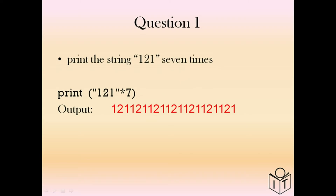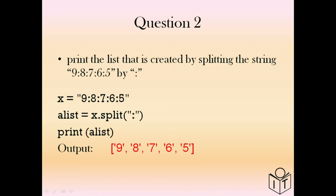If you want to print 'one to one' seven times, we just print the string 'one to one' multiplied by 7. The output would have 'one to one' seven times on the same line. For question two, we use the built-in function split. We put the string in X, then create a list — that's going to equal X.split(':'), splitting it by the colon in double quotation marks. The output is nine, eight, seven, six, five as a list, so you'll see the square brackets.